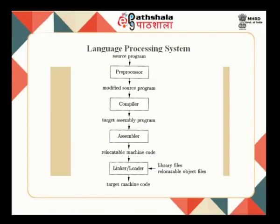The assembler takes this input and converts it into relocatable machine code consisting of 1s and 0s. Finally, the linker links several modules into a single thing and then loads it into main memory for execution, which is done by the loader.